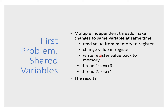It doesn't behave as a single operation at the machine level. In this example, we have thread one which does x equals x plus six, and thread two does x equals x plus one. You'd hope that the result would be x plus seven, but it may not be.